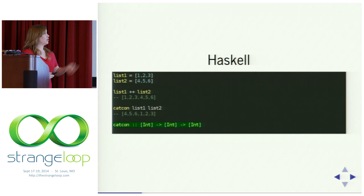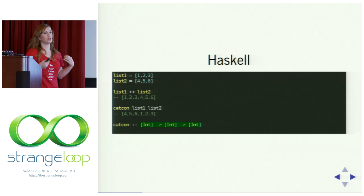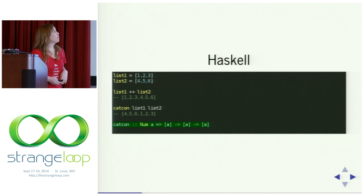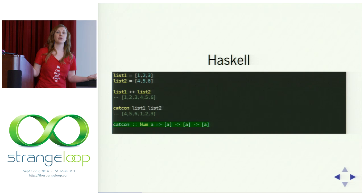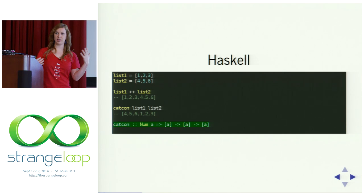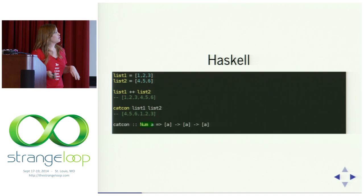So how would you define such a function? Here's an example of a function signature: the name catcon, then after the double colons, the arguments it takes and what it returns. We have a function that takes two lists of int and returns a list of int — but that's quite specific. We can make it more general by using lists of 'a', where 'a' is a generic type. The bit before the big arrow is called a type class, which you can think of as a bit like an interface.